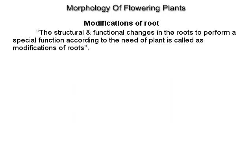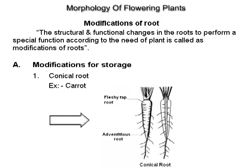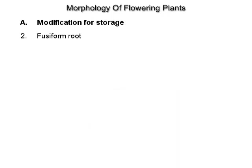Modifications of root. The structural and functional changes in roots to perform a special function according to the need of the plant are called modifications of roots. Modifications for storage: conical root, e.g. carrot; fusiform root, e.g. radish.